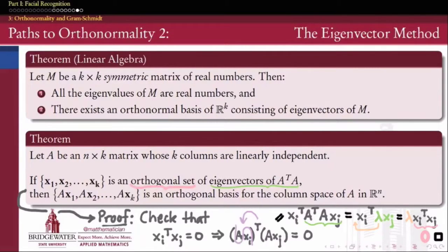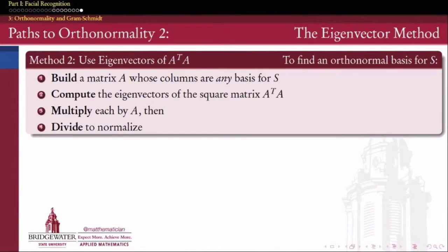So how do we actually use this to find an orthonormal basis for a given subspace? We treat it like a projection problem. First, find any basis for our subspace S, build a matrix A with those basis vectors as columns, then compute the eigenvectors of A^T A — using a computer if needed. Then multiply each eigenvector by A, and if they're not already unit length, divide them by their length to normalize them.